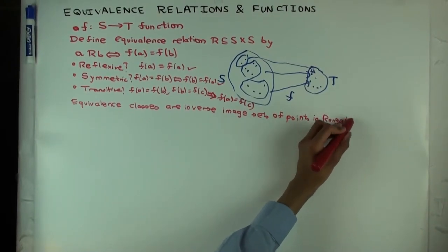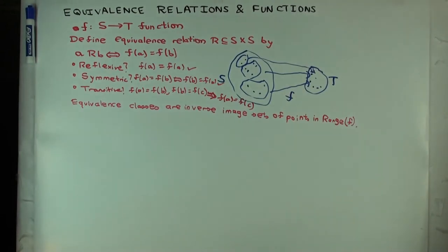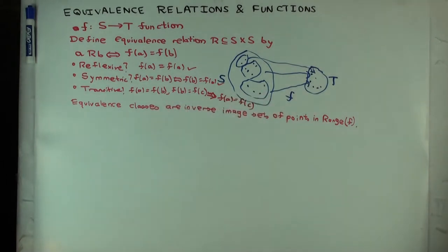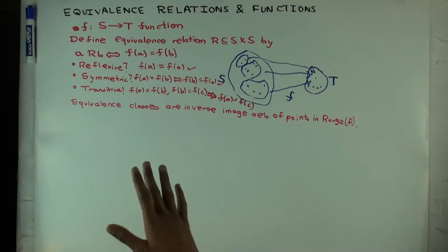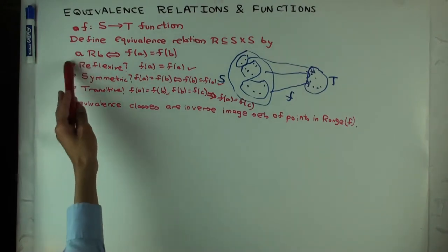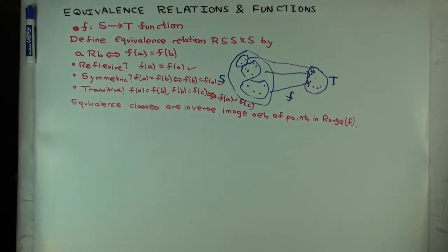So what is an equivalence relation actually doing? In some sense, you can think of f as capturing some attribute of the elements of S and ignoring everything else. We say that two things are equivalent if they match each other in that attribute — the equivalence relation just says that attribute value is the same.